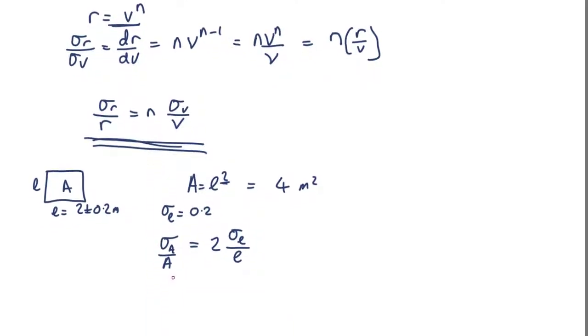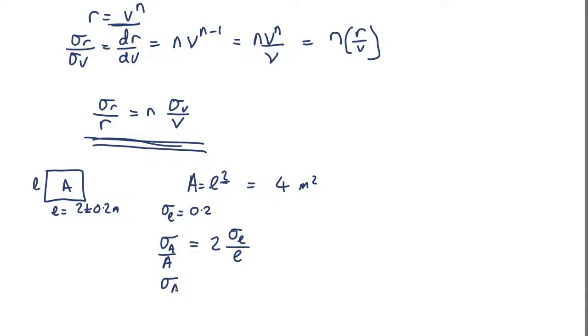If you put numbers in, we find that uncertainty in the area over 4 equals 2 times uncertainty in the length over 2. So the uncertainty in the area equals 4 times 2 times 0.2 over 2 equals 0.8. So the area is 4 plus or minus 0.8 meters squared.